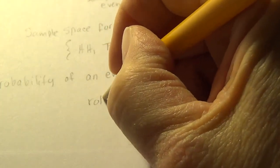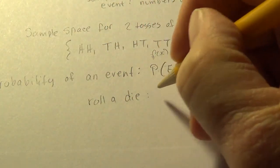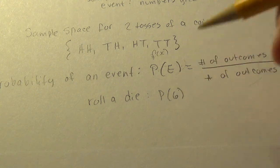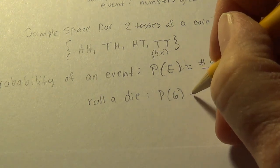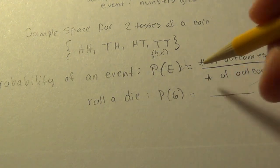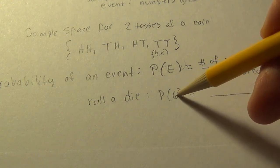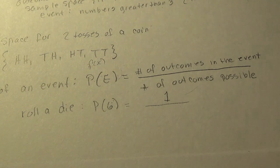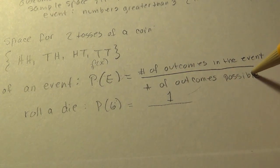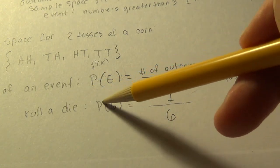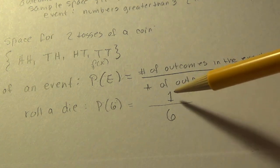For example, when rolling a six-sided die, what is the probability of rolling a six? There is only one side with a six, so the number of outcomes in the event is one. The total number of possible outcomes is six. So the probability of rolling a six is one out of six, or one-sixth.